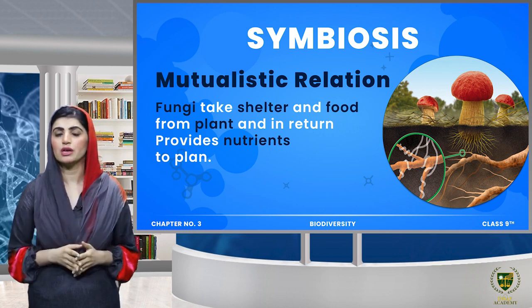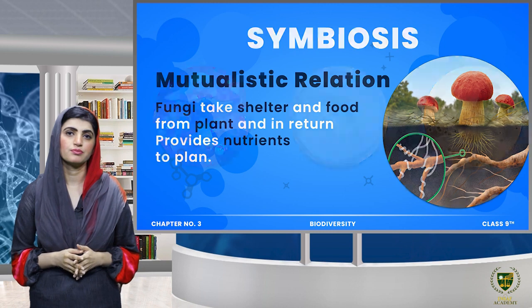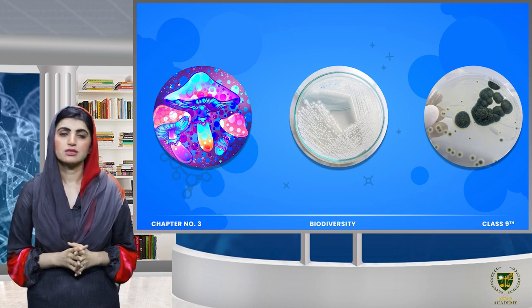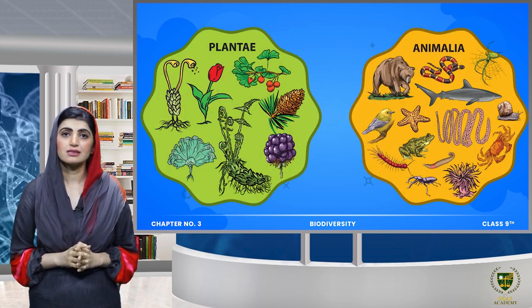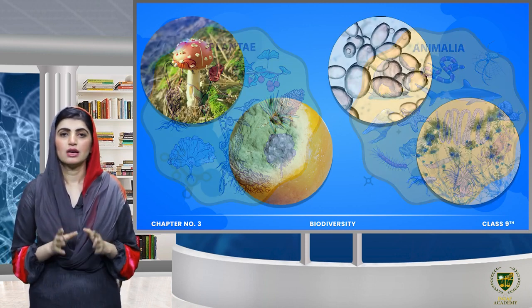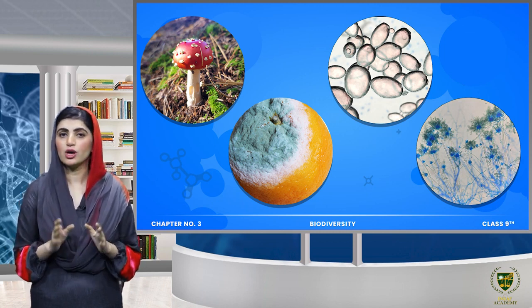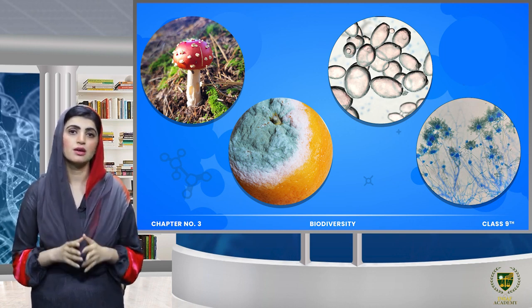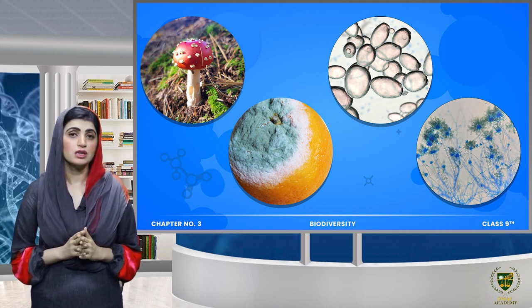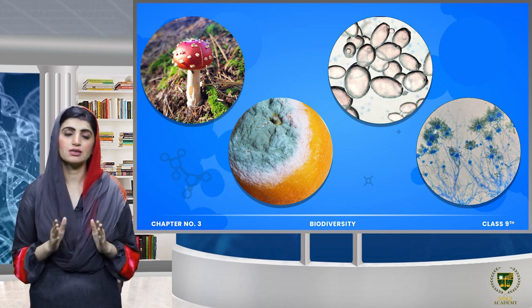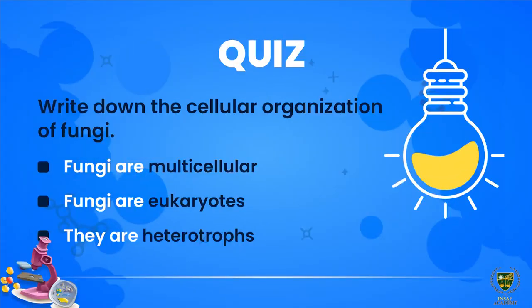This relationship is mutualistic and overall we call it symbiosis. Today we have studied fungus in detail. In our next lecture we will study the remaining kingdoms in detail, like Kingdom Animalia and Kingdom Plantae. I hope you all now understand well what the benefits of fungi are, in what forms they exist, and that fungi are edible and non-edible, eukaryotic, multicellular, and unicellular.